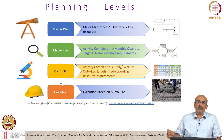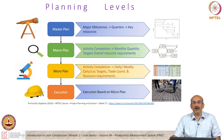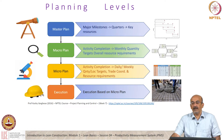This graphic shows the different levels of planning. We have the master plan, the macro plan, the micro plan, and the execution. We are familiar with the different documents related to each stage. For example, the major milestone stage is typically shown as a Gantt chart or bar chart, and the CPM stage is associated with the macro plan.